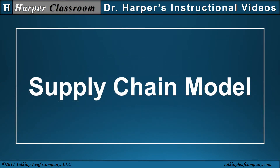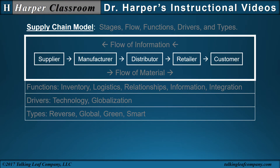Supply chain model. This supply chain model has five different stages. We just saw a three-stage model, and this is a five-stage model. In practice, supply chains can have many stages.